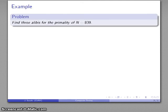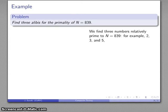For example, take N = 839 and determine whether it's prime. I'll pick numbers relatively prime to 839: 2, 3, 5. They're not divisors, so I can use them. I evaluate these to power 838 mod 839.